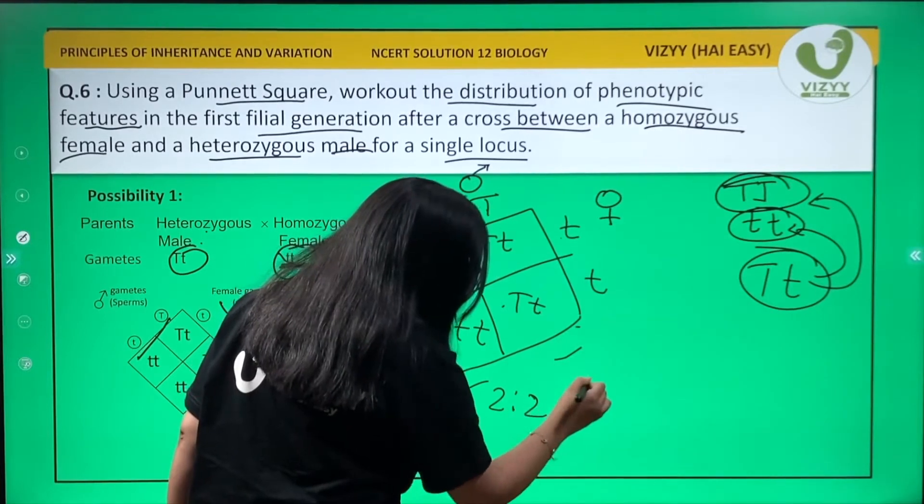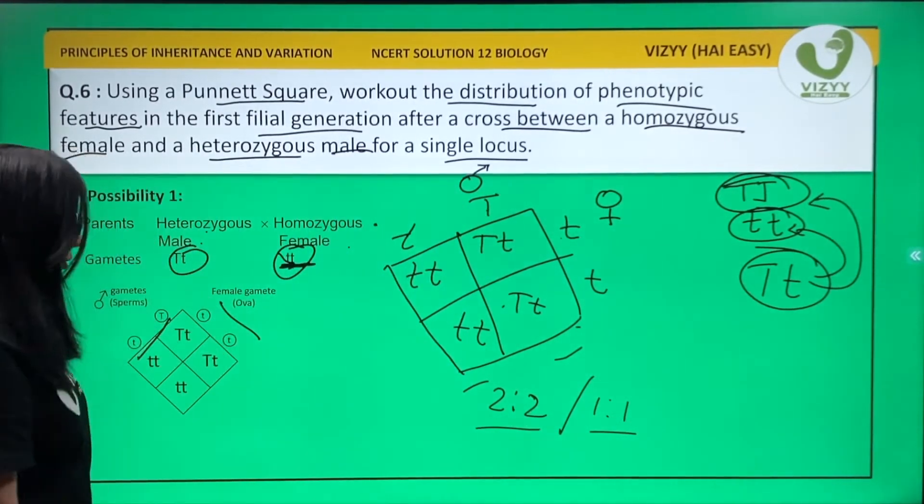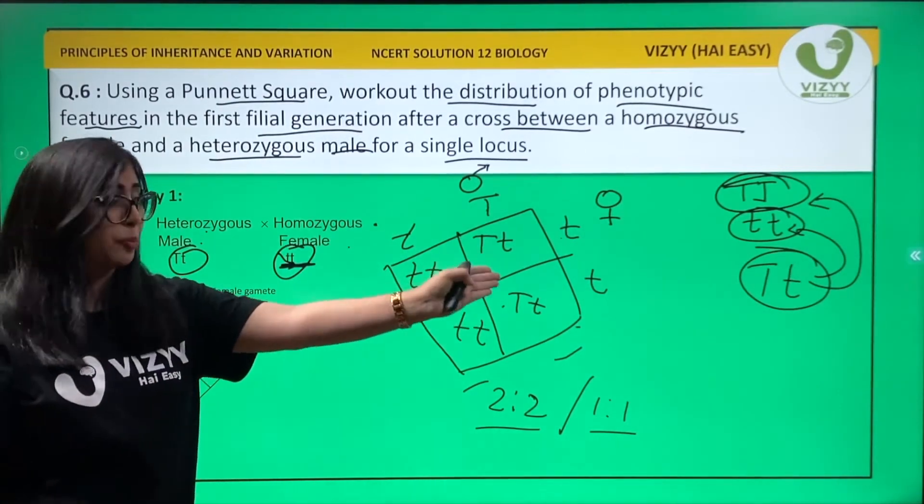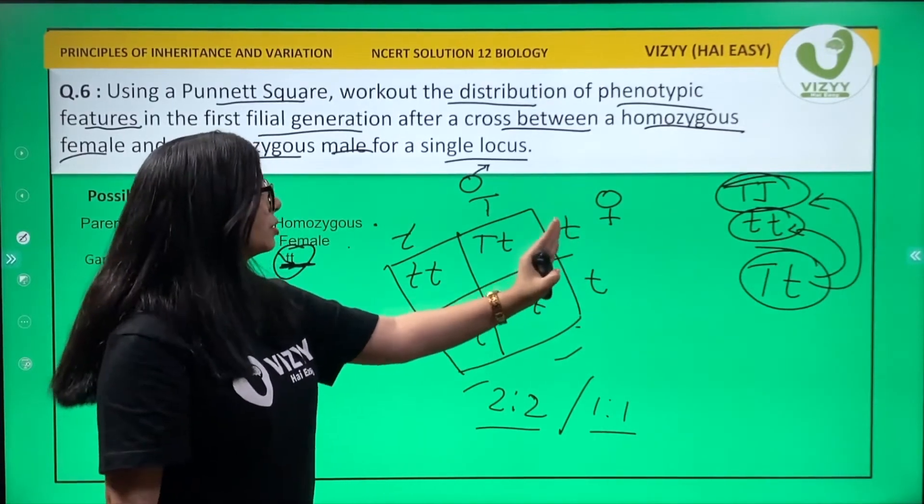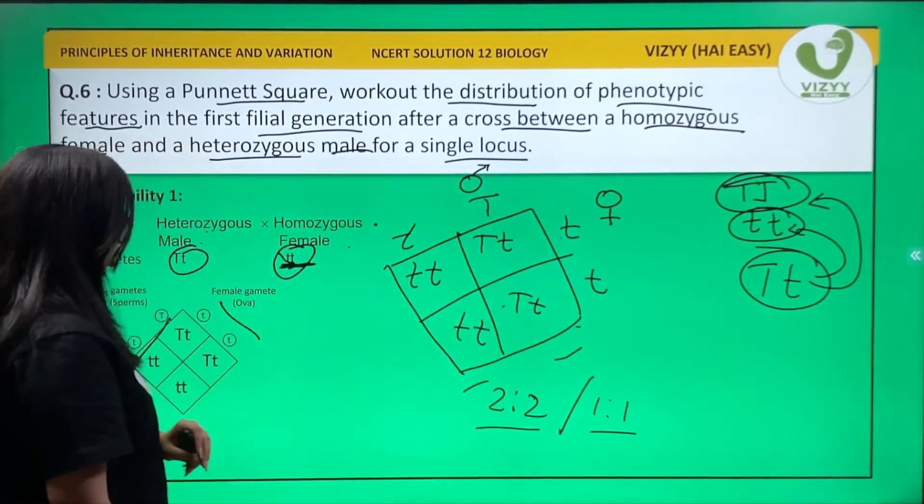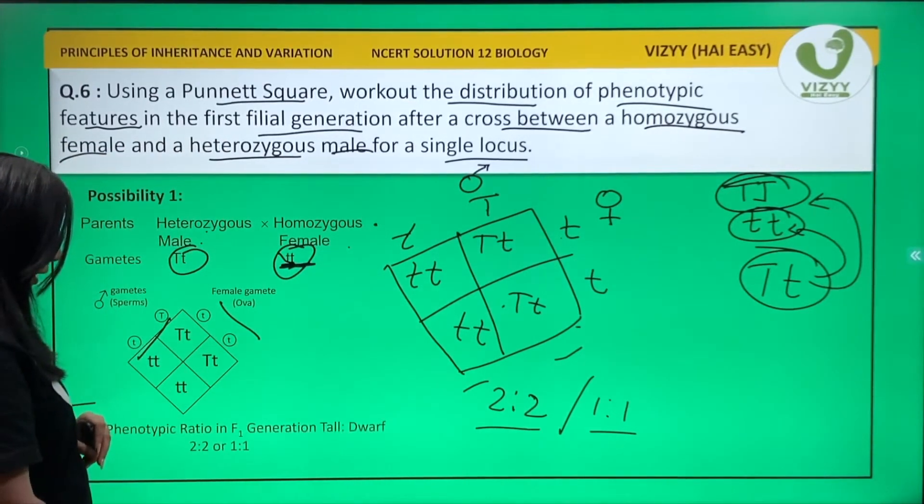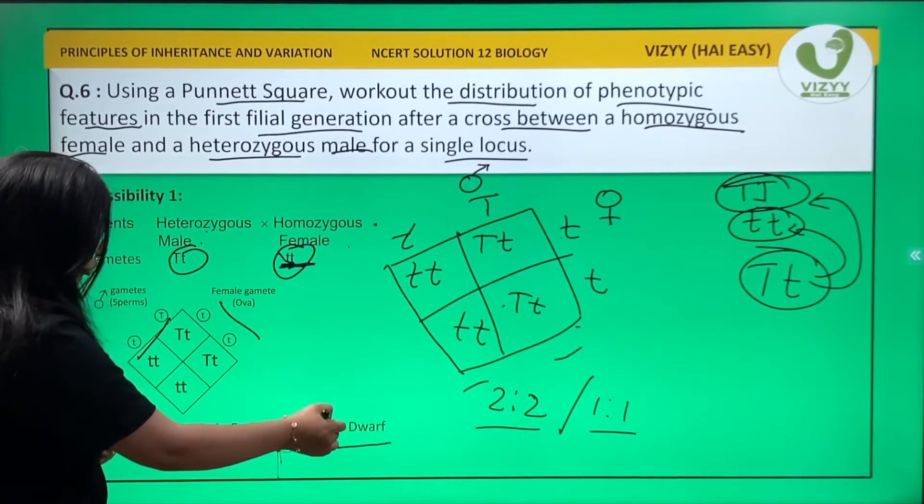50% of the offspring would be tall heterozygous, or 50% would be homozygous dwarf. The phenotypic ratio in F1 generation is tall to dwarf, 2:2 or 1:1. One possibility complete.